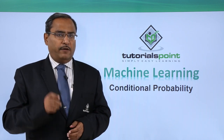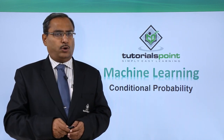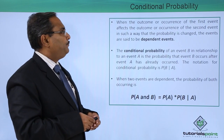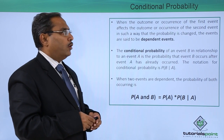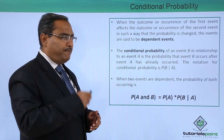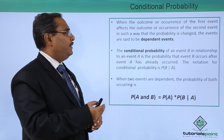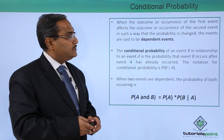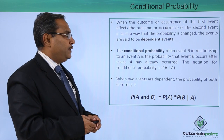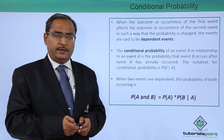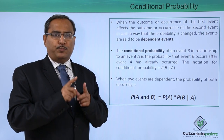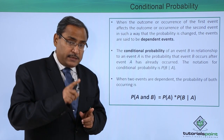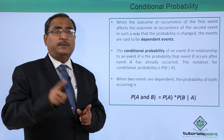In this session, we are discussing a very important topic: conditional probability. When the outcome or occurrence of the first event affects the outcome or occurrence of the second event in such a way that the probability is changed, the events are said to be dependent events. Two events will be dependent if the probability of occurrence of the first event affects the probability calculation of occurrence of the second event.